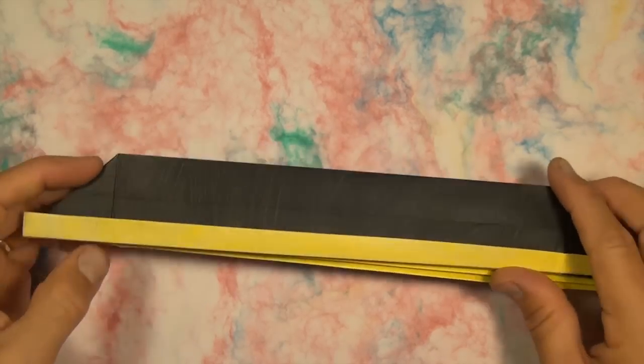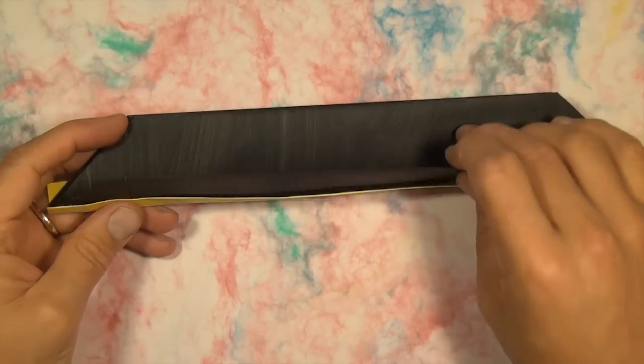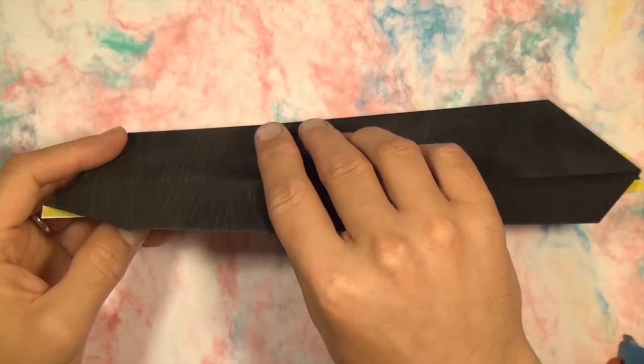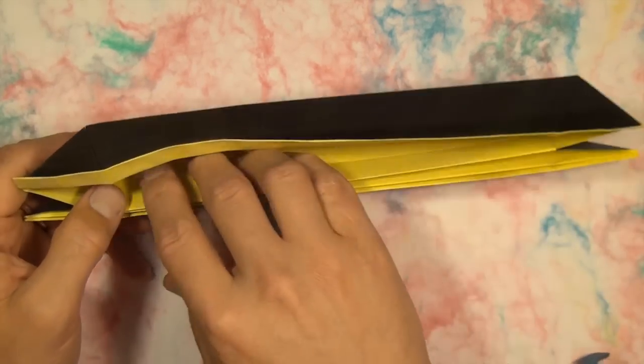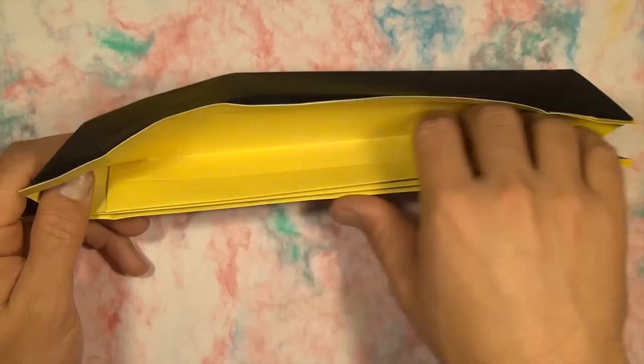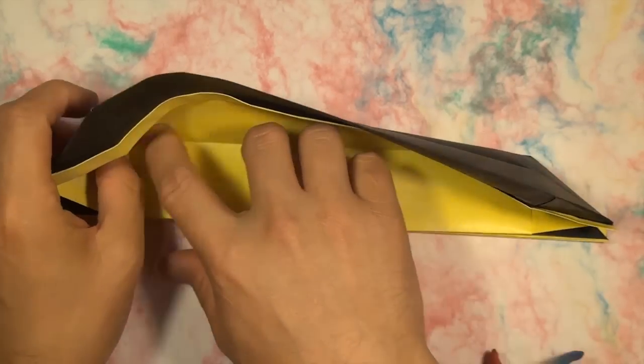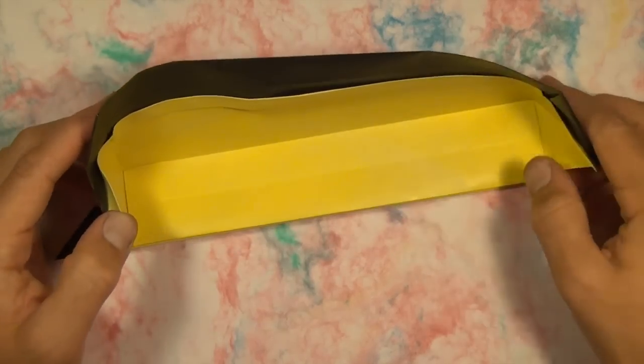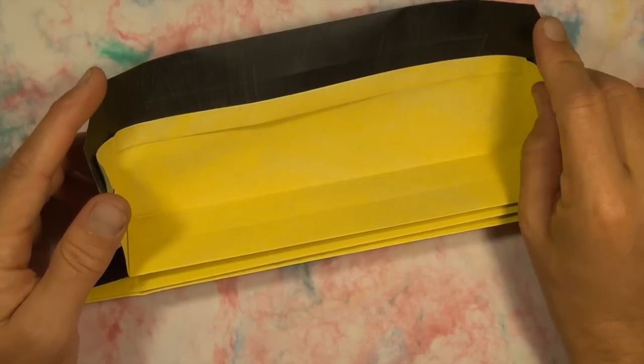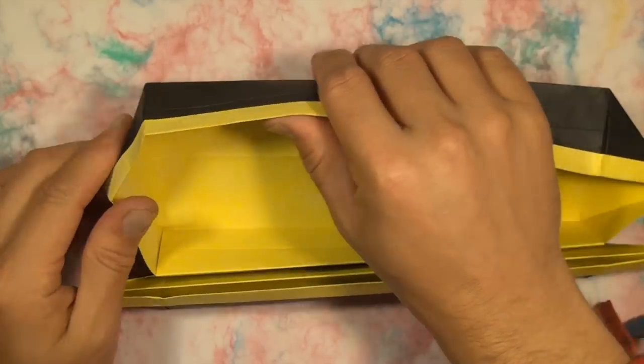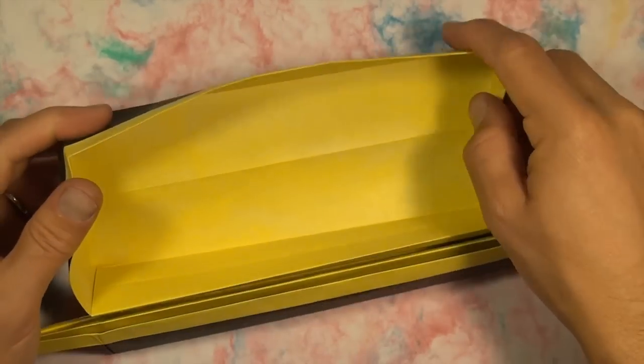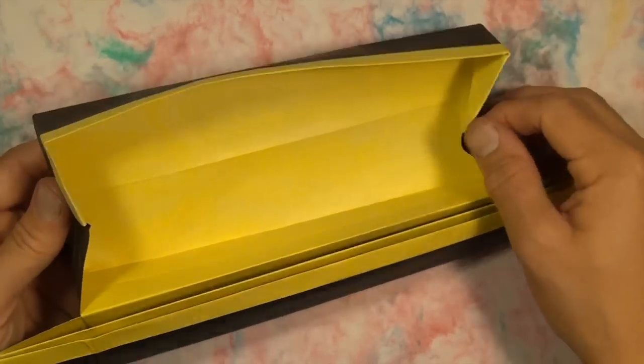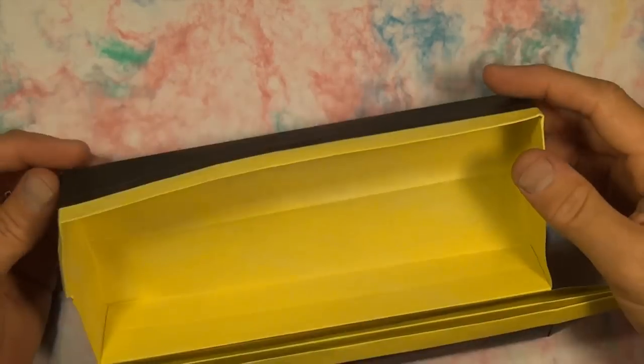All right so now we're gonna open it up so lift one flap down and now stick your hand inside this pocket here and form it into a box like this and lift up this right here so here's our first box and go around the box to shape the edges make them sharp.